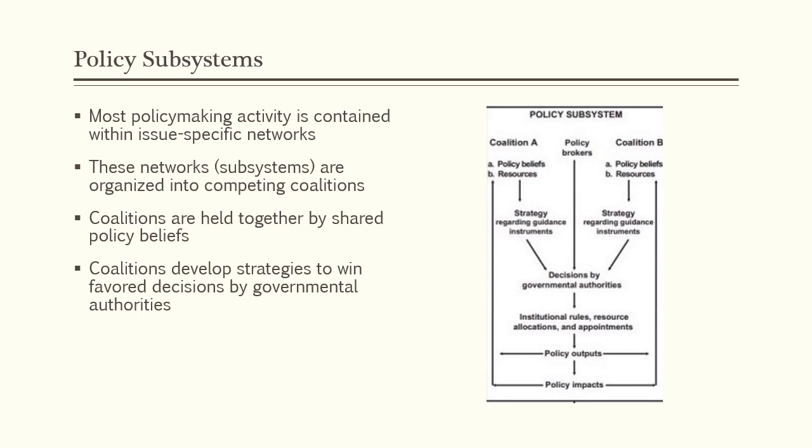According to the ACF, the glue that holds coalitions together is shared policy beliefs. Basically, members of a coalition share general goals for what the future of their policy issue area will look like, and what types of government policies will help them reach those goals. Coalitions use resources at their disposal — things like money, media attention, public support, technical expertise, and relationships with government decision makers — to try to win decisions by governmental authorities that reflect the coalition's policy beliefs. As you read this week's articles on housing policy in California, see if you can identify different coalitions, as quotes from policy actors to journalists can be a useful quick-and-dirty way of learning about the policy beliefs of coalitions.